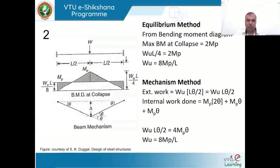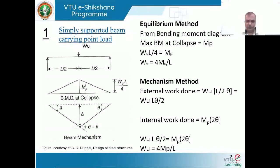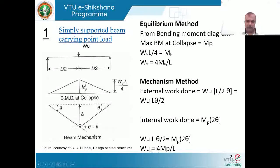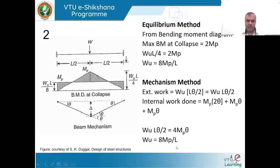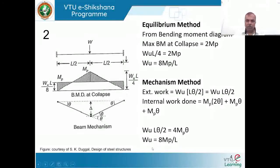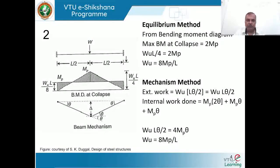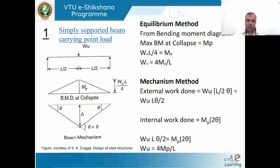Comparing the two cases: a simply supported beam carries W = 4mp/L, while the same beam fixed at both ends carries W = 8mp/L. For the same beam and span, mp/L is constant. The fixed beam carries twice the load of the simply supported beam. There is no practical advantage in designing a beam as simply supported — continuity substantially increases load carrying capacity.